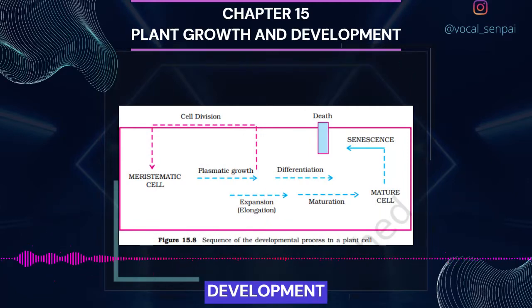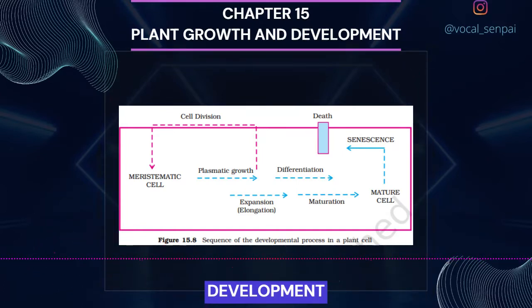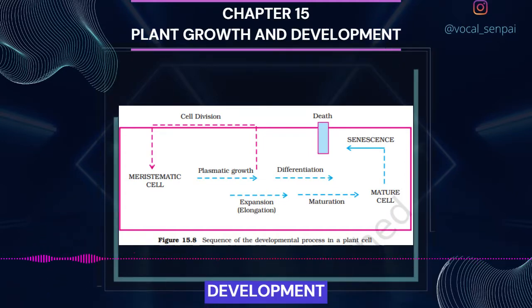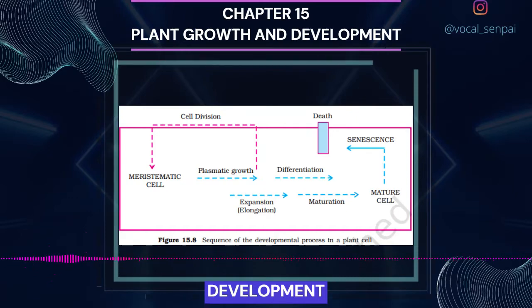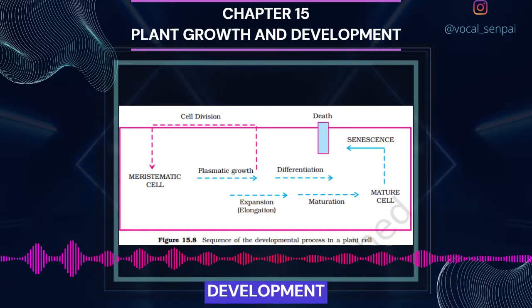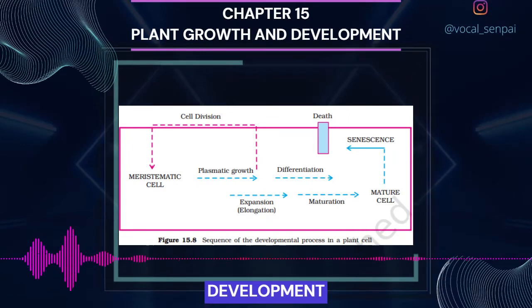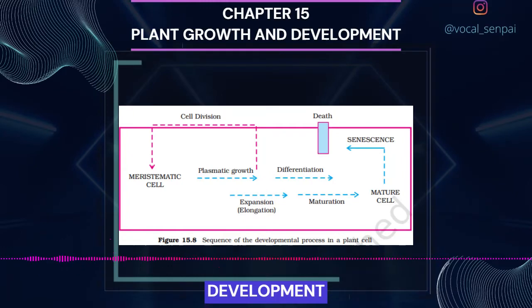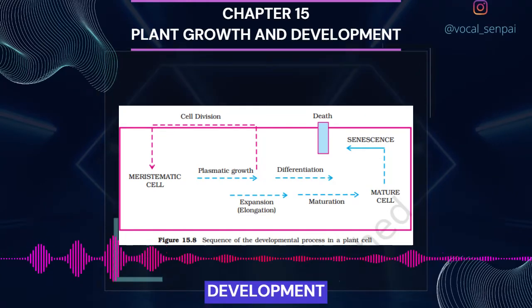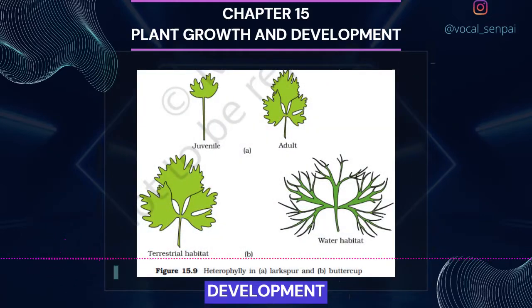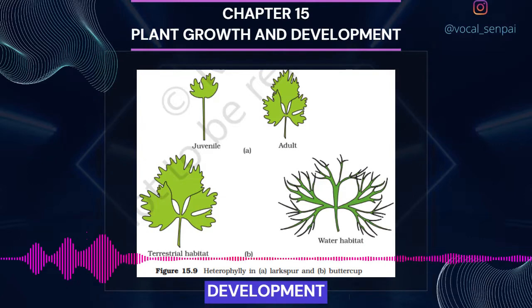Development is a term that includes all changes that an organism goes through during its life cycle from germination of the seed to senescence. Plants follow different pathways in response to environment or phases of life to form different kinds of structures. This ability is called plasticity. For example, heterophylly in cotton, coriander and larkspur. In such plants, the leaves of the juvenile plant are different in shape from those in mature plants. On the other hand, differences in shapes of leaves produced in air and those produced in water in buttercup also represent heterophyllous development due to environment, figure 15.9. This phenomenon of heterophylly is an example of plasticity.